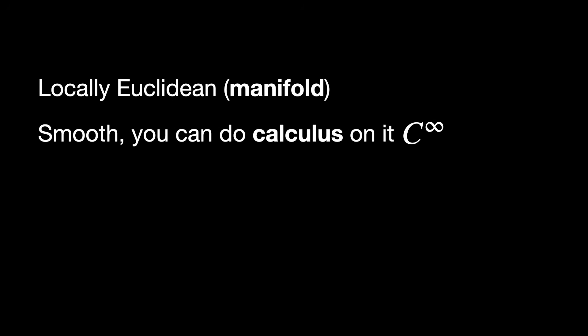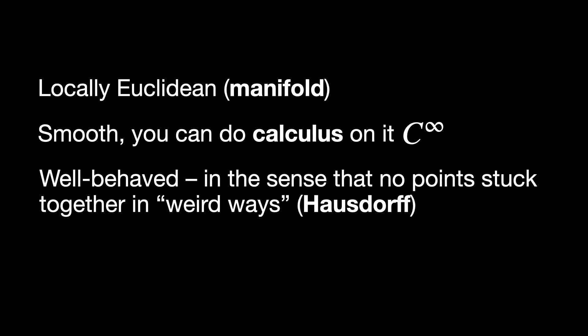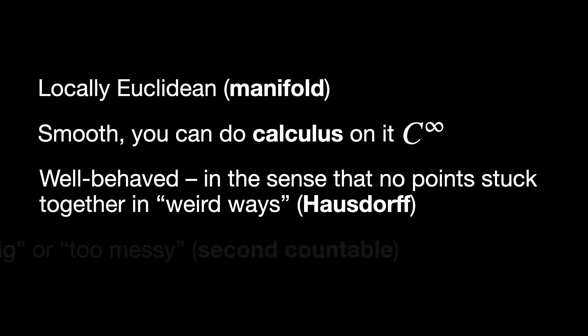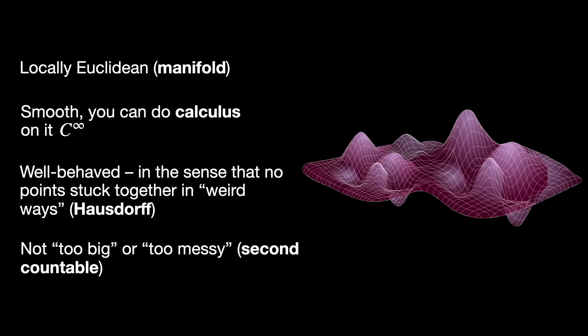So, these are the properties we've seen so far. The space is locally Euclidean — so a manifold. Smooth, meaning you can do calculus on it — so it's C-infinity. Well-behaved, in the sense that no points are stuck together in weird ways — so it is Hausdorff. And the space is not too big or too messy — in other words, it is second countable. So far, this is the precise definition of a smooth manifold.